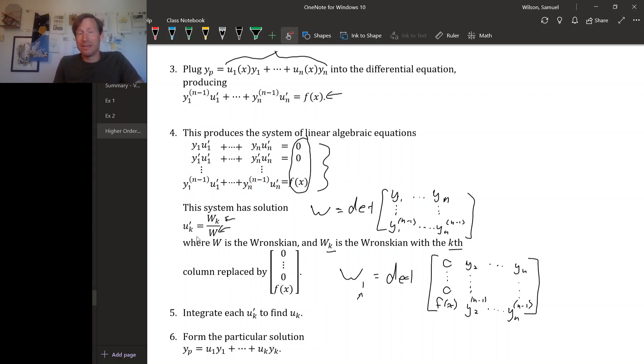And indeed, if you look back at the formulas we got for u sub 1 prime and u sub 2 prime in the order 2 case, if you work out these determinants, W sub 1 and W sub 2, you get exactly the formulas that we worked out for these two. So this is the general case here.